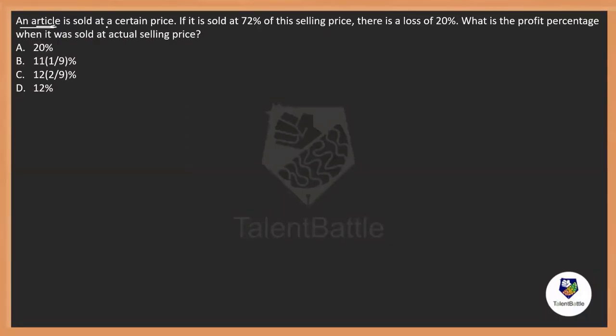An article is sold at a certain price. If it is sold at 72% of the selling price, then there is a loss of 20%. What is the percentage of profit when it is sold at the actual selling price? They are asking what would be the percentage of the profit when it is going to be sold at the actual selling price.